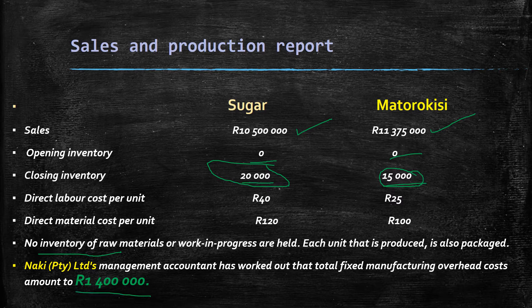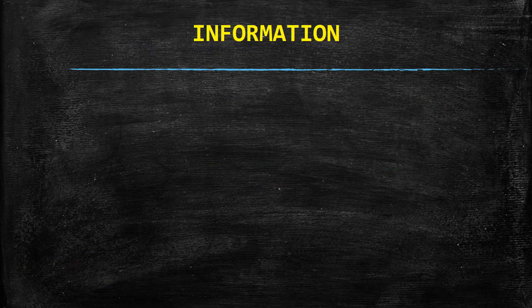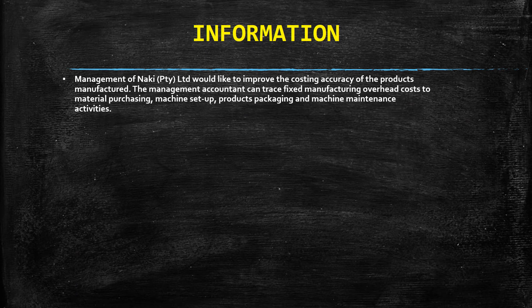The question also tells us there is no inventory of raw material or work in progress held. Each unit that is produced is also packaged. The management accountant of the firm has calculated fixed manufacturing overheads at 1.4 million. This is very useful information — please do jot it down as we build up to answering the question.